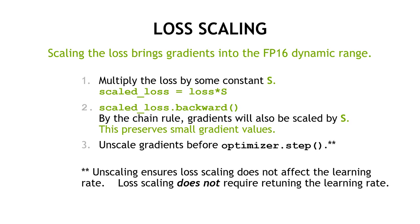In the code, you multiply the loss by some scale factor S to create a scaled loss. Then you call backward on the scaled loss which, by the chain rule, also scales all the gradients, preserving small gradient values by boosting them into the FP16 representable range. Finally, you unscale the gradients in full FP32 precision before calling optimizer step. This unscaling ensures gradient values are what they would have been without scaling, so loss scaling doesn't affect any of your hyperparameters and doesn't change your effective learning rate.